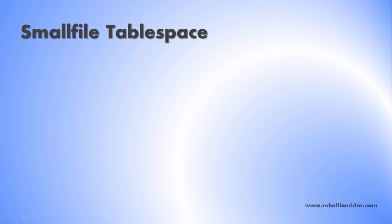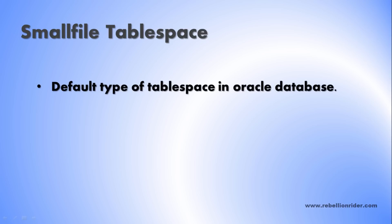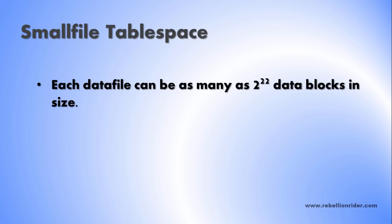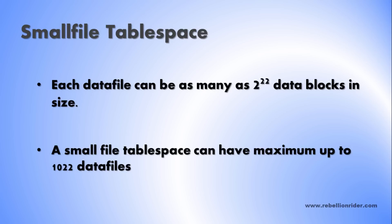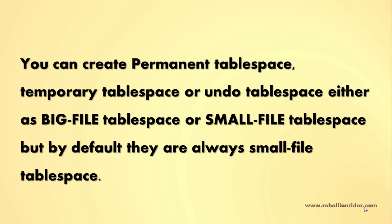Then we have small file tablespace, which is the default type of tablespace in Oracle Database. Small file tablespace can have multiple data files, and each data file can be as many as 2 raised to 22 data blocks in size. A small file tablespace can have a maximum of up to 1022 data files, though this number depends on your operating system. You can create permanent, temporary, or undo tablespace either as big file tablespace or small file tablespace, but by default they are always small file tablespace.